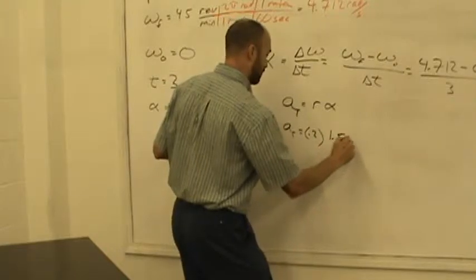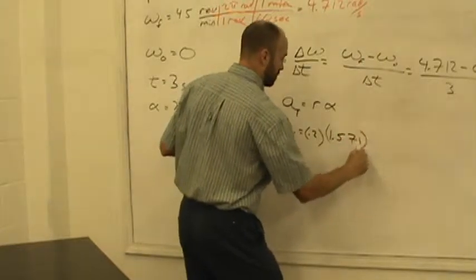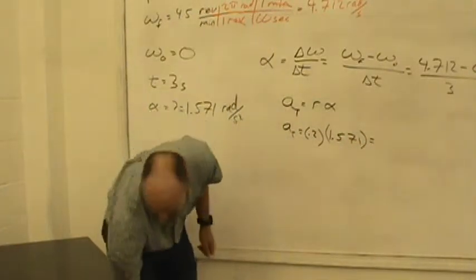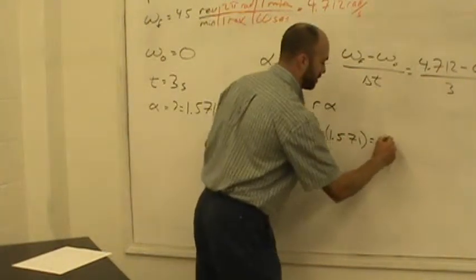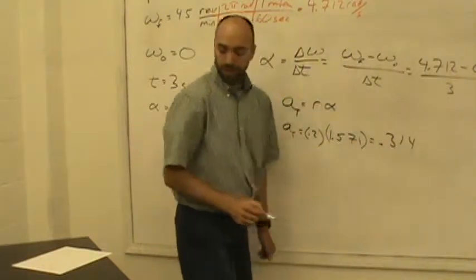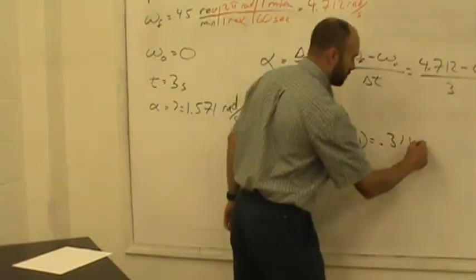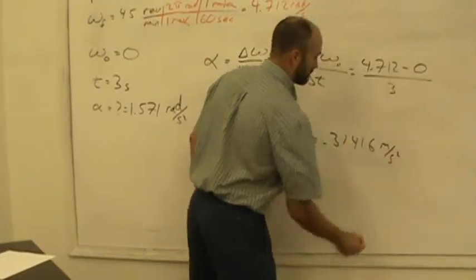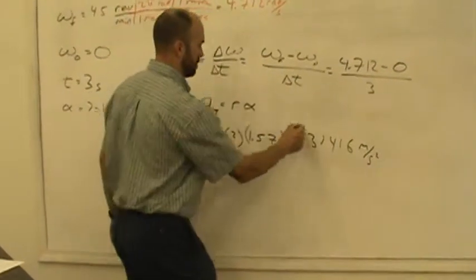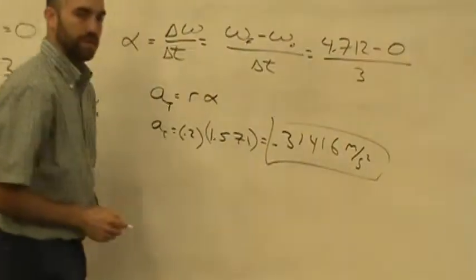times the angular acceleration, which was 1.75, I'm sorry, 1.571. And when you cut that out, you get 0.3146 meters per second squared. It's not so bad.